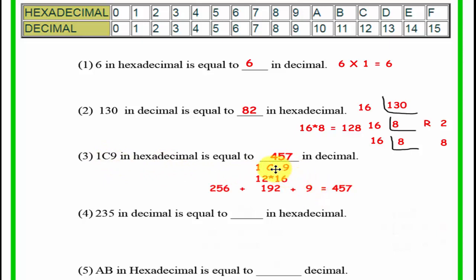And the last number, or the first one is number 1, 1 times 16 squared is 256, or 16 to the power of 2. So, 256 plus 192 plus 9 equals 457.